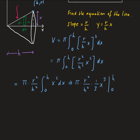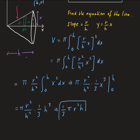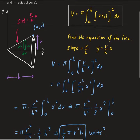Now evaluating from zero to h: we have r squared over h squared times one-third times h cubed. Plugging in zero gives us zero. So we have h cubed over h squared, which leaves us with h. That gives us one-third pi r squared h. So the volume of a cone is one-third pi r squared h, in units cubed since we're dealing with volume.